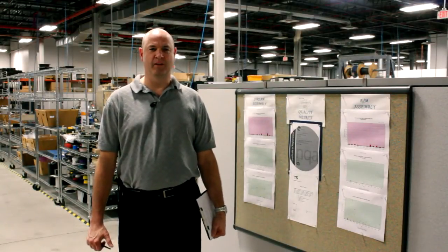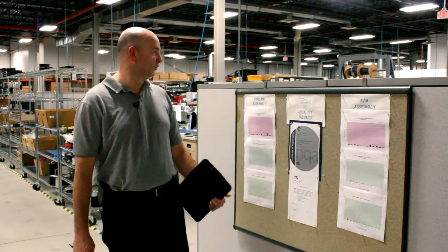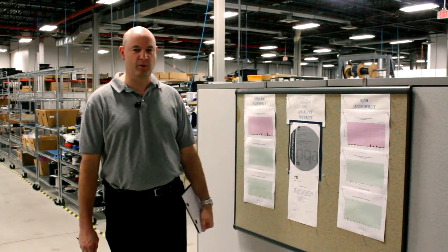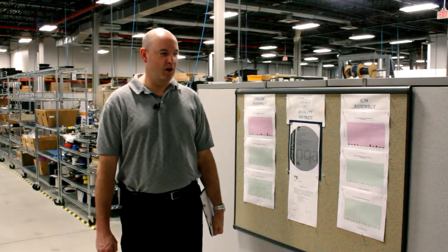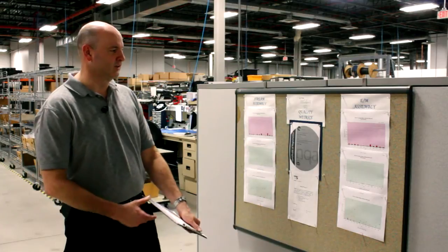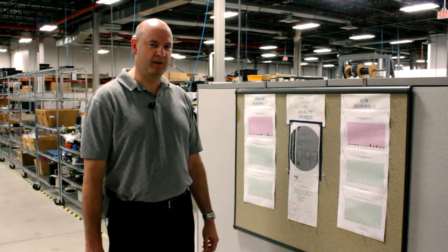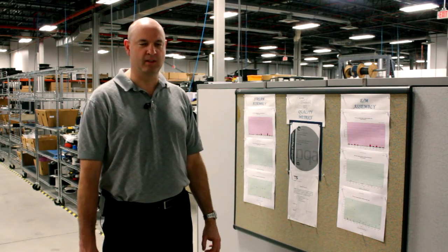As we enter onto the production floor, I'd like to stop and take a look at the next metric board that we have posted. As we go through the production floor tour, you'll see these boxes posted throughout the entire floor. On here, this is our internal factory metrics. Basically, what you have here is a set of graphs that track on a monthly basis captures and escapes that come out of each work center.